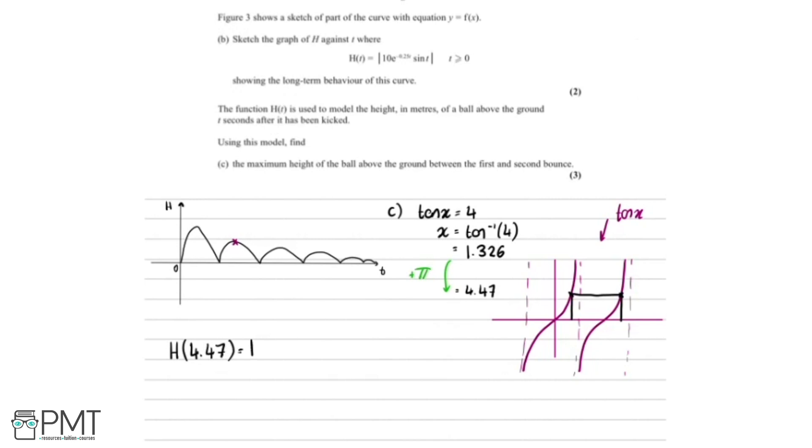So if we do h(4.47), that's going to equal... So looking back up at the question, we see that's the modulus of 10 multiplied by e^(-0.25) multiplied by t. So in this case, 4.47 multiplied by sin(4.47).